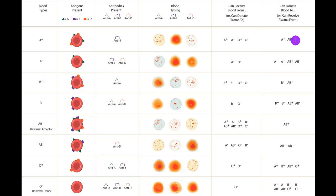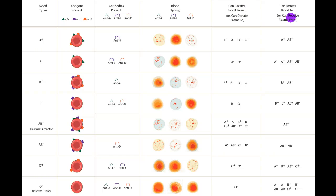You can receive plasma from anyone that does not have an antibody that would attack one of your antigens. For A positive blood, most people have anti-A or anti-D in their plasma — A negative has anti-D, B positive has anti-A — so you're essentially limited to receiving plasma from A positive and AB positive. You can receive plasma from anyone you could donate blood to, because the governing rule is the same.